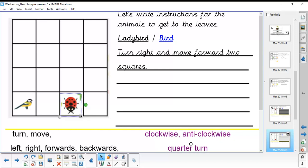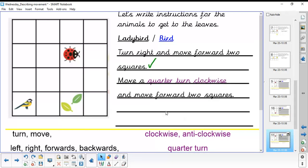Clockwise, anticlockwise, quarter turn. Again, pause the video and have a go at writing more instructions using these purple words here, if you can. So, another way that we could describe the ladybird's movement is move a quarter turn clockwise. Move a quarter turn clockwise. And move forward two squares.